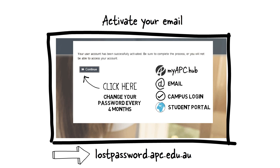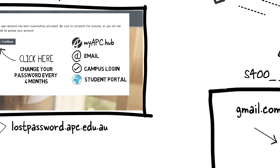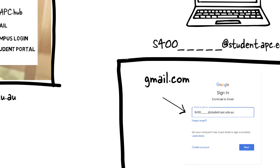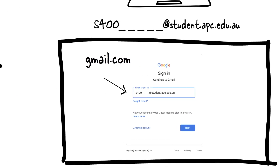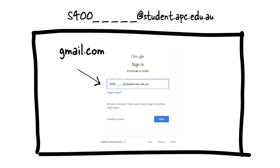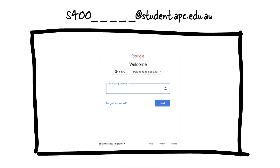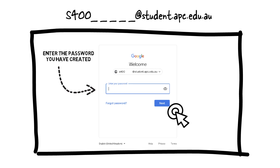After activating your email address, go to gmail.com to access your student email. Enter your full student email address and click Next, then enter the password you have just created.